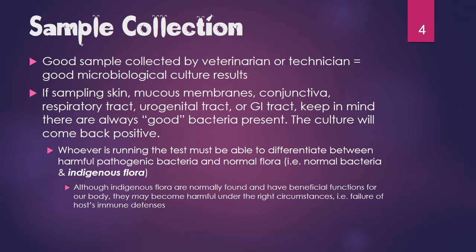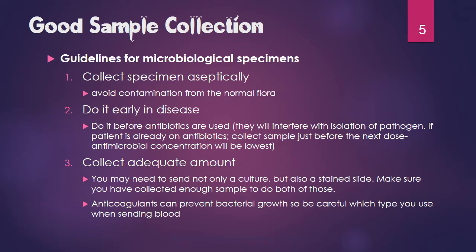They have to differentiate between indigenous flora and harmful pathogenic organisms. Although indigenous flora is normally found in areas like skin, mucous membranes, and GI tract, and serves beneficial functions, it may become harmful under the right circumstances — for example, if the immune system doesn't keep it in check and it starts multiplying and taking over.